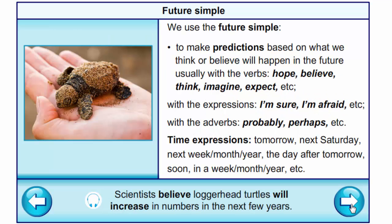We use the future simple to make predictions based on what we think or believe will happen in the future — usually with verbs hope, believe, think, imagine, expect, etc. With expressions I am sure, I am afraid, etc. With adverbs probably, perhaps. Example: Scientists believe loggerhead turtles will increase in numbers in the next few years.